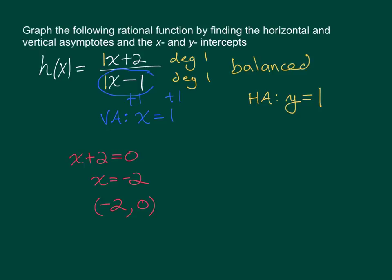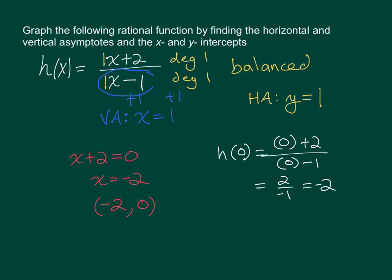In order to find the y-intercept, we find h of 0 by substituting 0 in for x and simplifying. When we substitute 0 in for x, we get 2 over negative 1, which is negative 2. So our y-intercept value is negative 2, and the x-coordinate of any y-intercept is 0, giving us the point 0, negative 2.